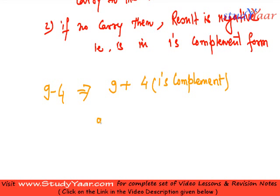So what is 9? 9 is 01001. And what is 4? My 4 is 00100.